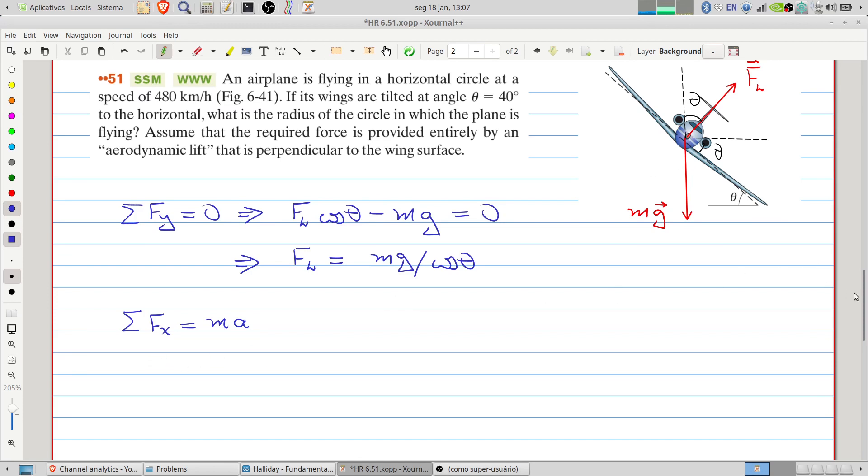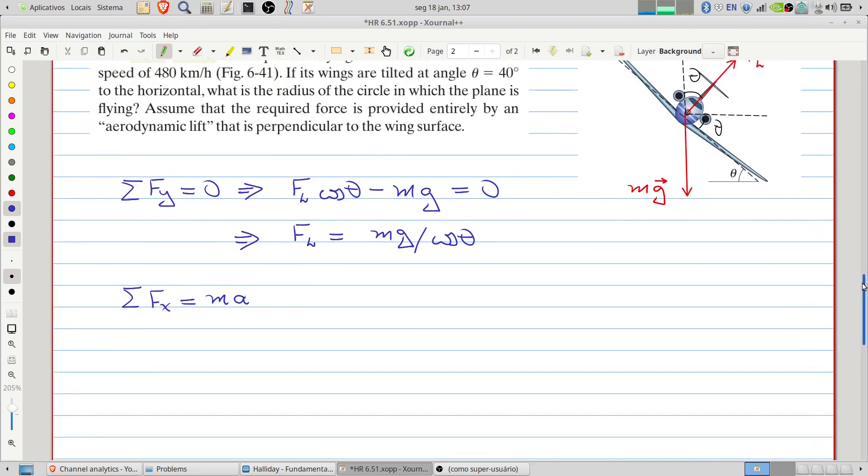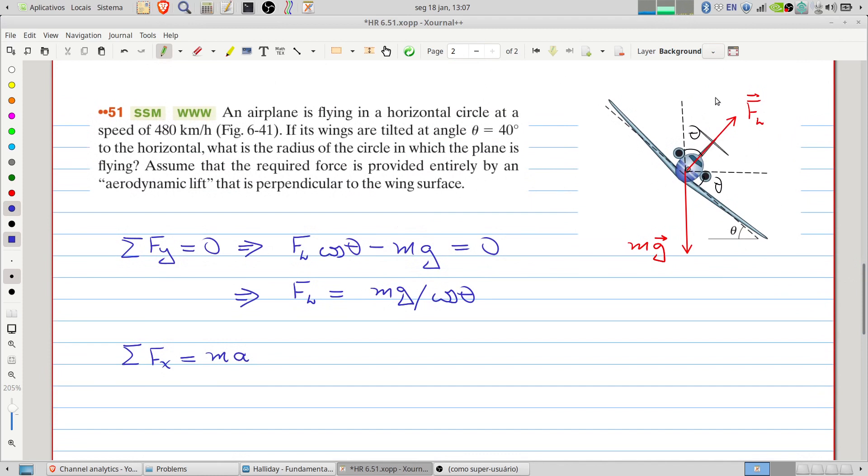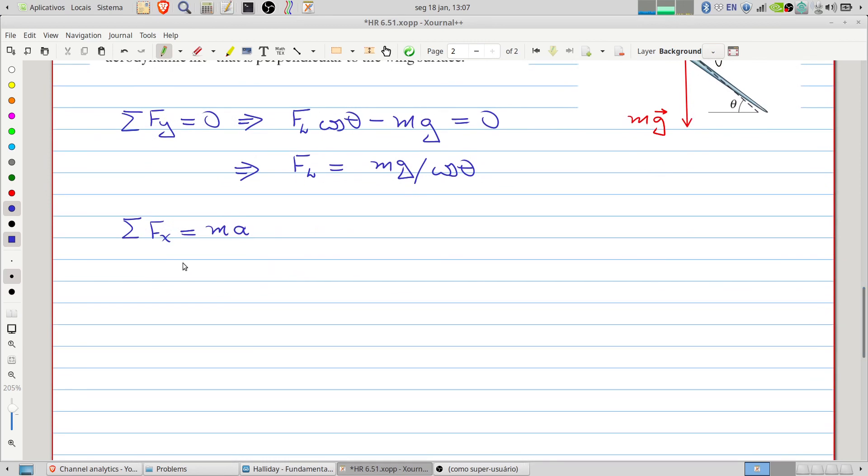So we can write that the only force we have in the horizontal direction is the projection of the lift. Let's project the lift. We'll have F_L multiplied by sine of theta equals m times the acceleration. And here we have the centripetal acceleration because we have a circular motion.